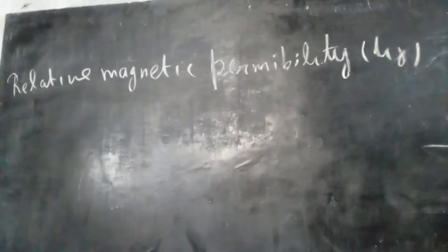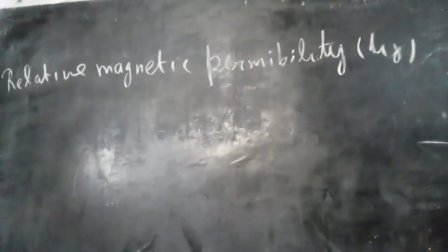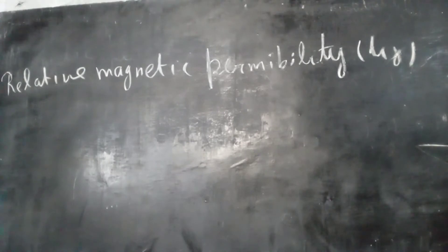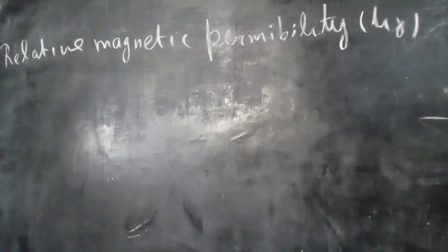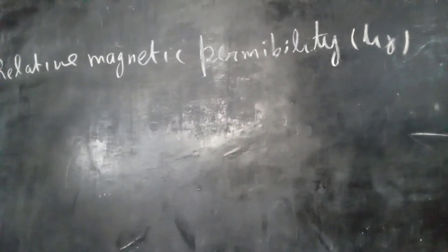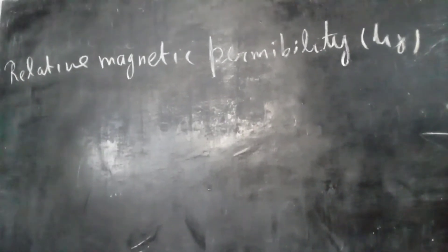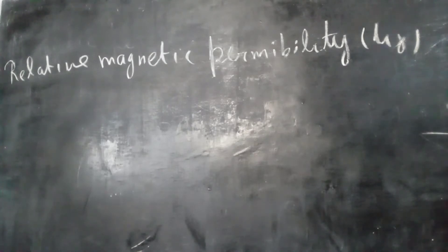Relative magnetic permeability. Relative magnetic permeability is represented by the Greek letter Mu with suffix R — written as Mu R. So, what is relative magnetic permeability?